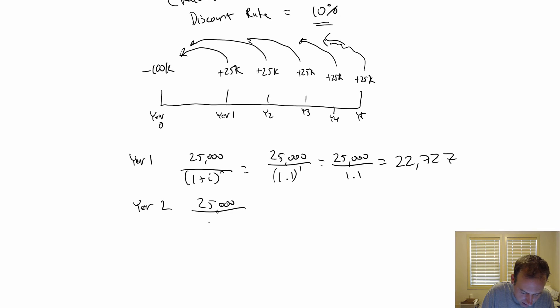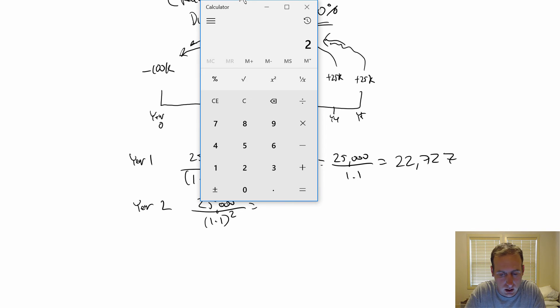Year two, $25,000 divided by 1.1 to the power of two. We're just going to continue on, do this for years three, four, and five. There is a more fancy formula, present value of an annuity it's called. This is an annuity. If you just compute the present value of an annuity, you can Google that formula. I'm just going to do it a year at a time here just to show you how each year works individually. But PV of an annuity, if you just Google that, you'll be all set.